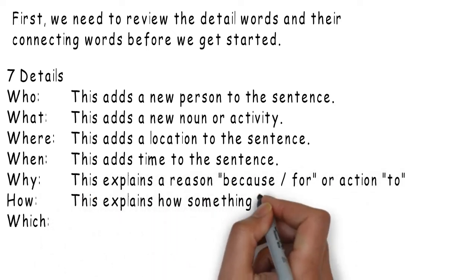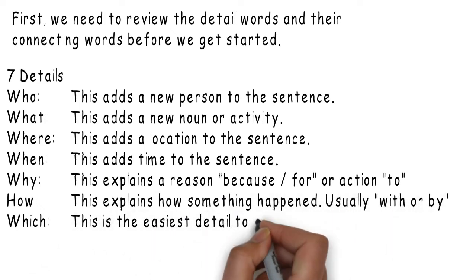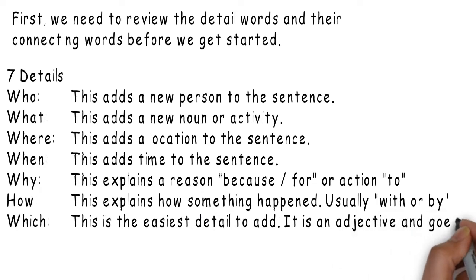Why – this explains a reason, because or for, or an action, to. How – this explains how something happened, usually with or by. Which – this is the easiest detail to add. It is an adjective and goes before the noun.